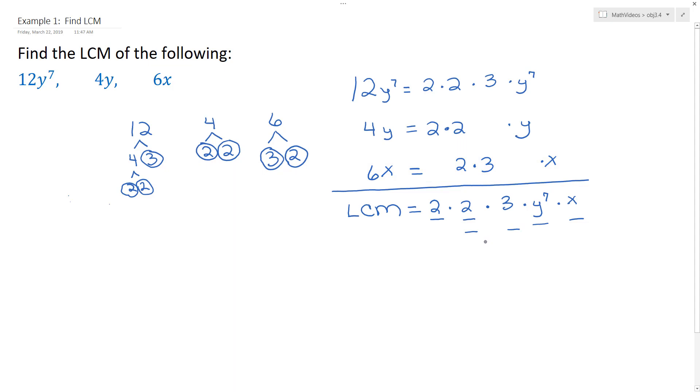And so that makes our least common multiple. So now what we can do is we can go ahead and multiply the number pieces together. So 2 times 2 is 4, times 3 is 12, and then we're left with the y to the 7th, x. So if you had to find the least common multiple for 12y to the 7th, 4y, and 6x, you would come up with 12y to the 7th, x.